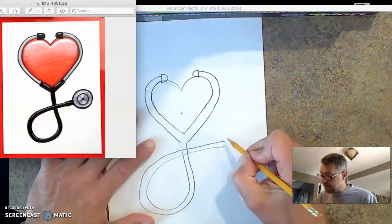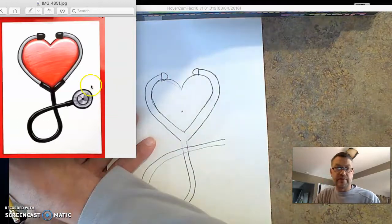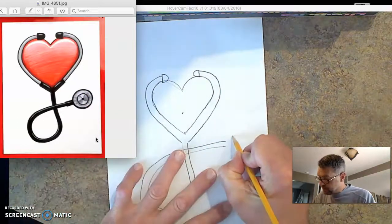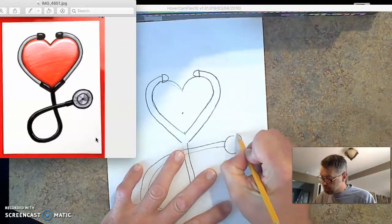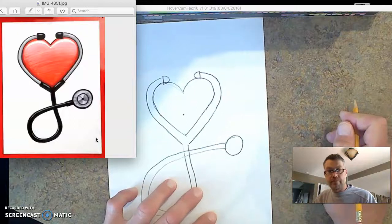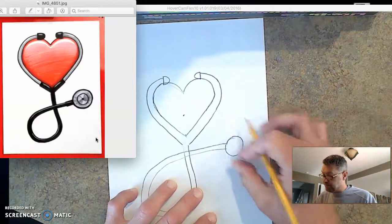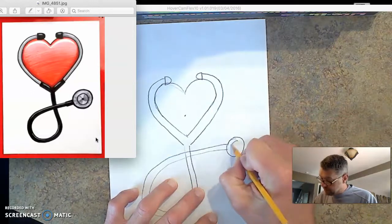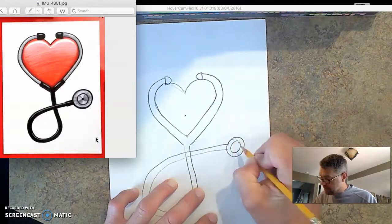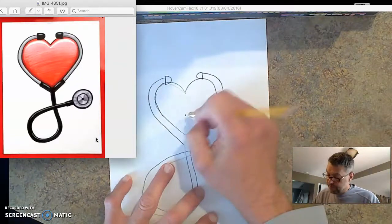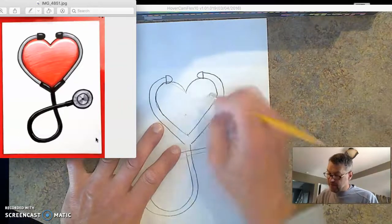And the next thing I'm gonna do is make the circle part. So I make my circle. That's just a little bit bigger than the tube. Then inside I make a circle on that. And inside I make a circle in there. Now I'm gonna erase that little dot in the middle.